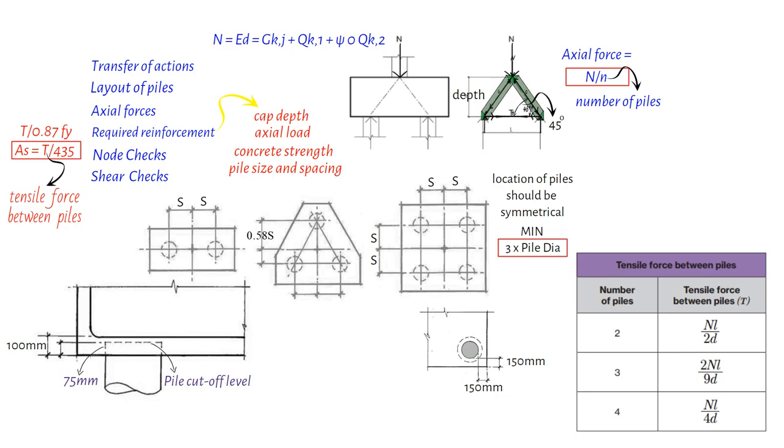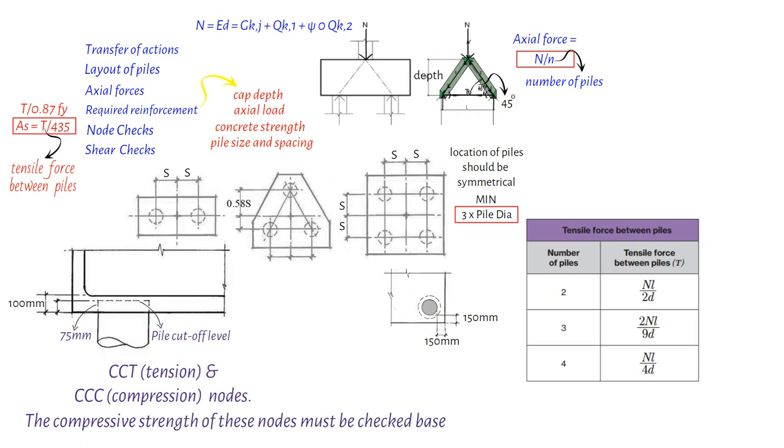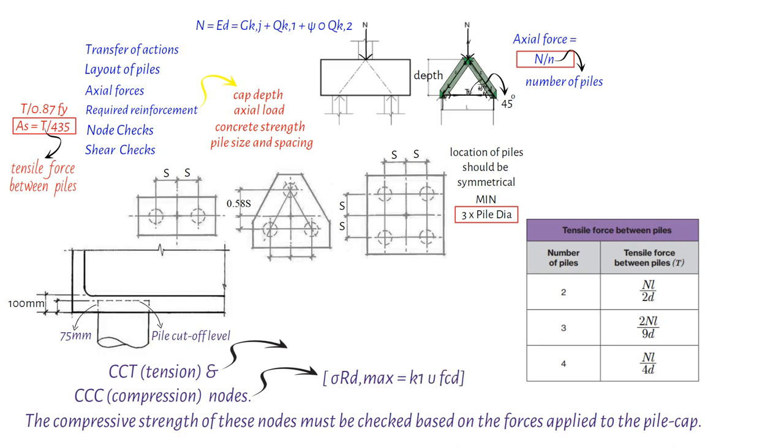As you may be aware, node checks are necessary to verify the strength of struts in pile caps. Pile caps contain two types of nodes, CTT tension and CCC compression nodes. The compressive strength of these nodes must be checked based on the forces applied to the pile cap. The strength of nodes in pile caps is calculated by considering the concrete strength and a factor, with different formulas for CCC and CTT nodes. It's crucial to compare the pile force with the calculated node force, particularly for shallow pile caps.